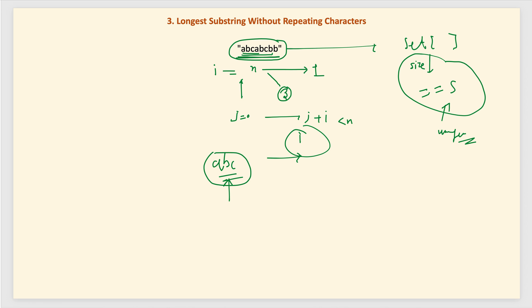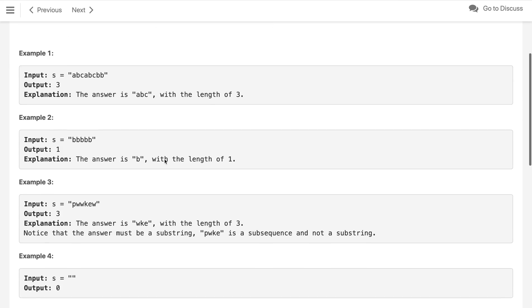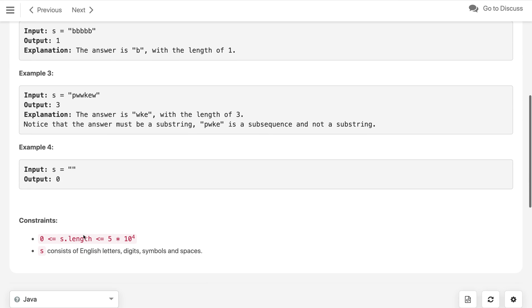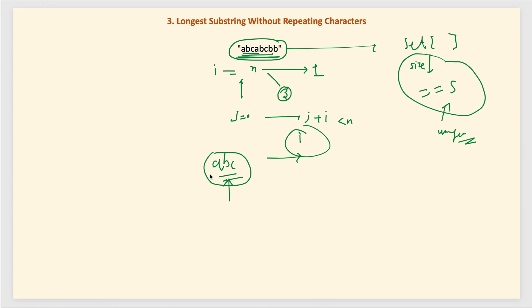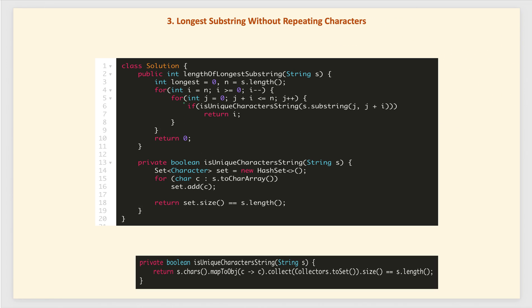This is the naive brute force solution. You can pause the video and try it, though it will time out on LeetCode because the input size can be up to 10 to the power of 4. Here is the code — the first for loop iterates the length from n down to 1.